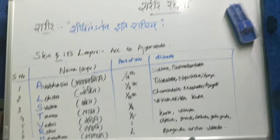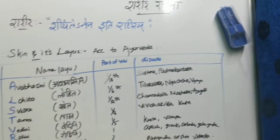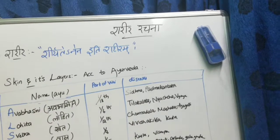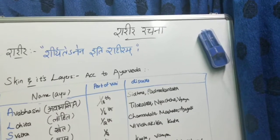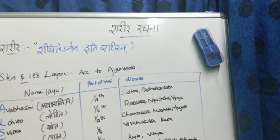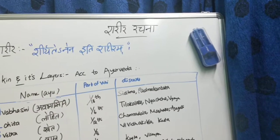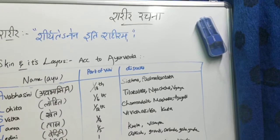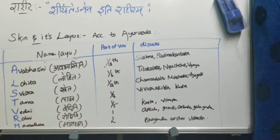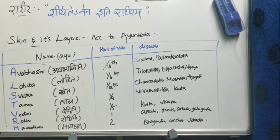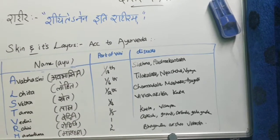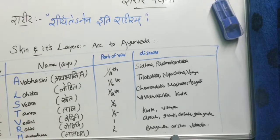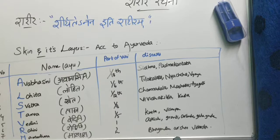Now let us look at the modern names of the layers of skin. The 1st layer Avabhasini corresponds to stratum corneum; 2nd layer Lohita to stratum lucidium; 3rd layer to stratum granulosum; 4th layer to stratum spinosum; 5th layer to stratum basalis; 6th layer is the papillary layer; and 7th layer is the reticular layer.